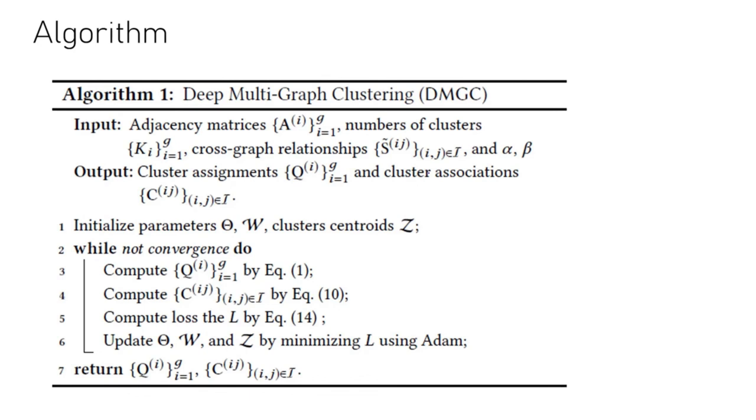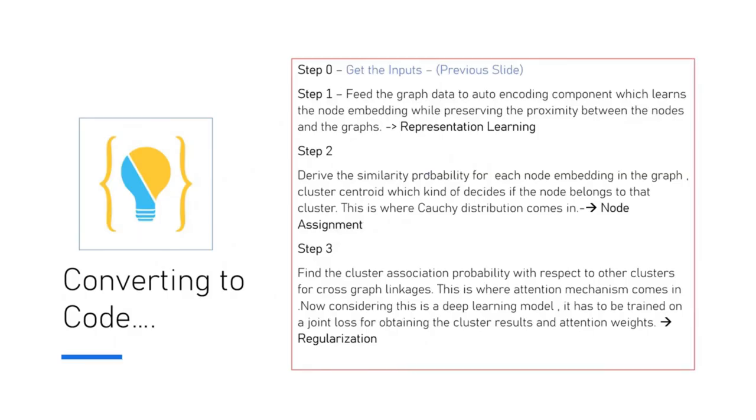Let's get into the code. We talked about the steps and the inputs from the previous slide. Step one is to feed the graph data to auto-encoding components which learn the node embedding while preserving proximity between the nodes. This is representation learning. Step two is deriving the similarity probability for each node embedding in the graph clusters to decide which cluster the node belongs to. This is where Cauchy distribution comes in—it's node assignment. Step three is the cluster association probability with respect to other clusters via cross-graph linkages, where the attention mechanism comes together. Considering this is a deep learning method, the model has to be trained with a joint loss function. That's the regularization.